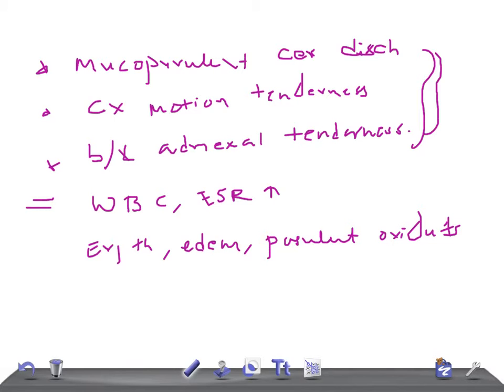Cervical cultures will come positive for chlamydia and gonorrhea, which might be the cause for acute salpingo-oophoritis.